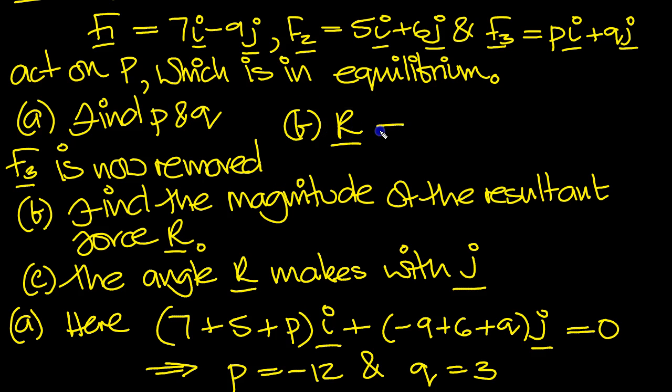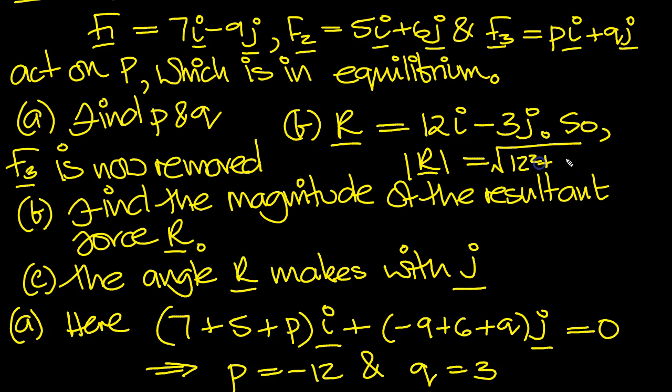The resultant force then, if there's no F3, is 7 plus 5 is 12i, and minus 9 plus 6j is minus 3j. So that's the resultant force then, so the magnitude of the vector R then, is equal to the square root of these two things squared. 12 squared plus 3 squared.